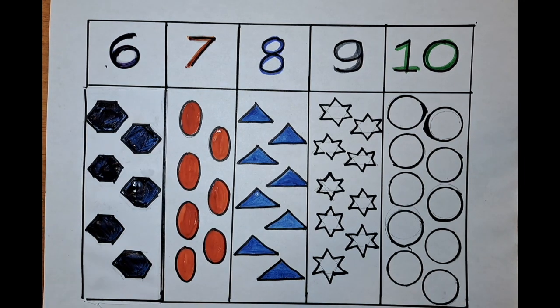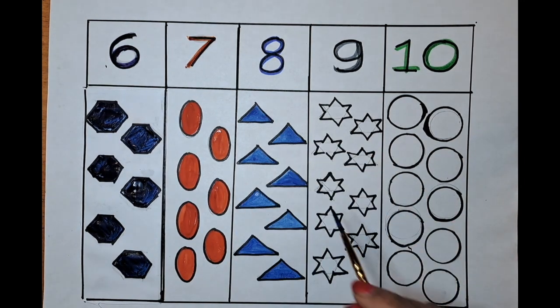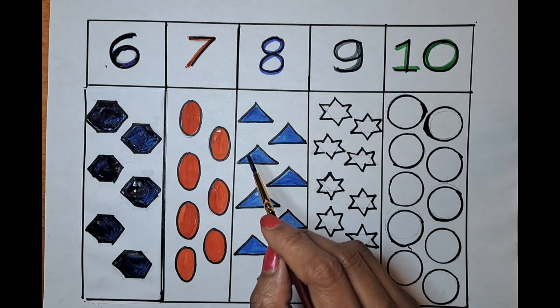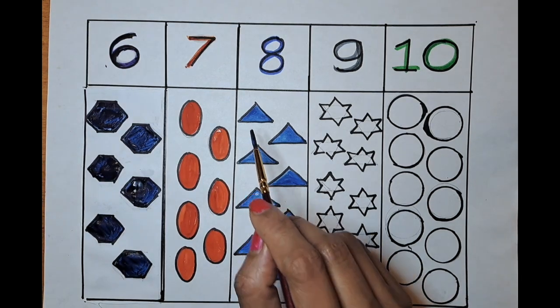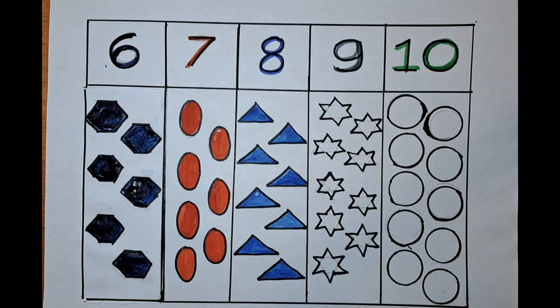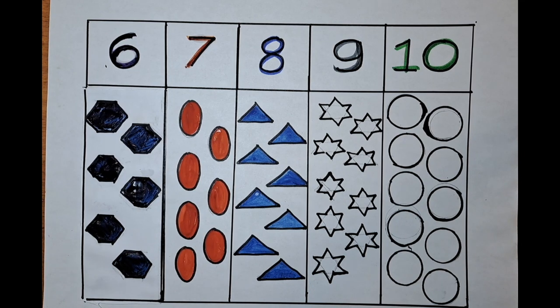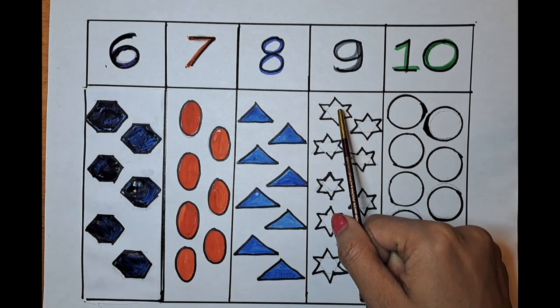Here we go, we are done with the shapes. It's eight triangles — eight triangles! What is the next shape?